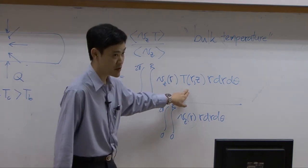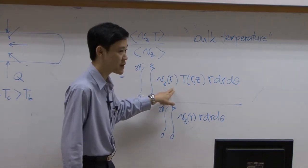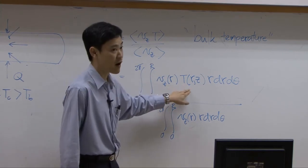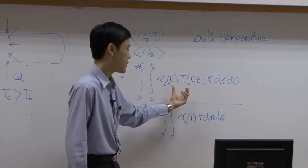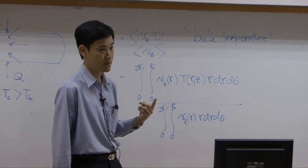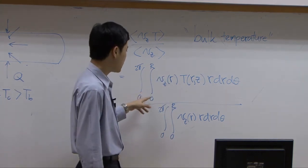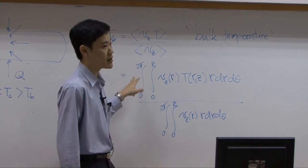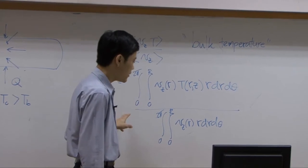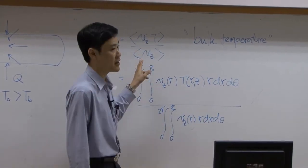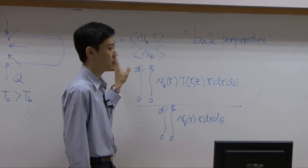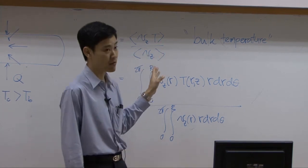The local velocity multiplied by local temperature — where velocity is a function of r and temperature is a function of r and z — are multiplied together and integrated across the surface area with respect to r and theta. You then divide by the average velocity. This gives you the bulk temperature.